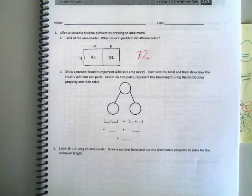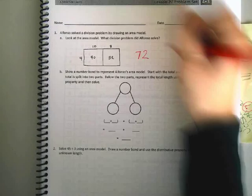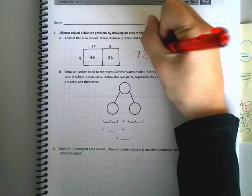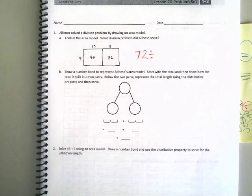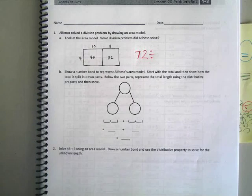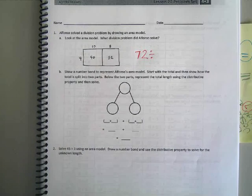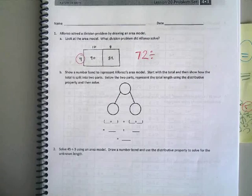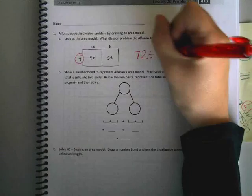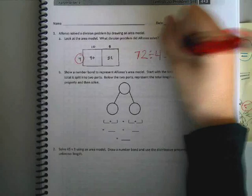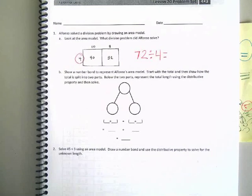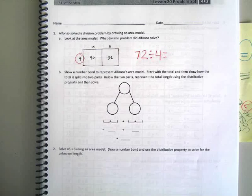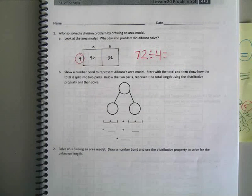And they said it was a division problem, right? Yes. So what could have he been dividing by? Devin G? Four. Four. That's what we've been doing, right? So 72 divided by four. What was the answer he got when he drew his picture? Raise your hand if you think you can figure it out.